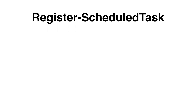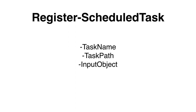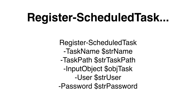Now that we have created the New-ScheduledTask object, we can finally register our task with the Windows Task Scheduler using Register-ScheduledTask. Parameters that need to be set are TaskName — the name of the task — and TaskPath — where the task should be created within the Windows Task Scheduler. In the InputObject parameter, we need to use our New-ScheduledTask object variable. If the task should run as a specific user, we need to specify the user and the password.